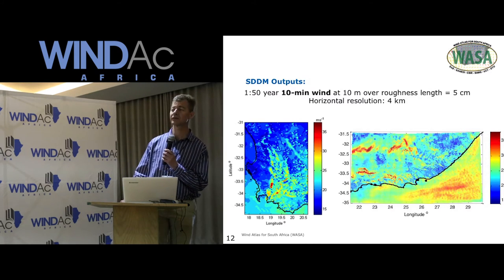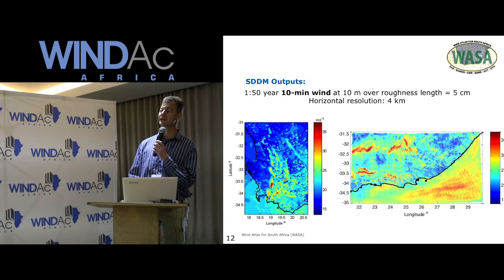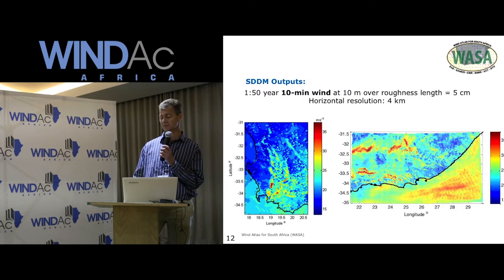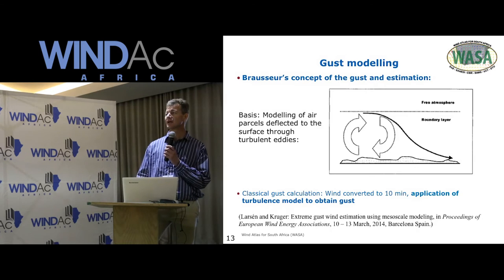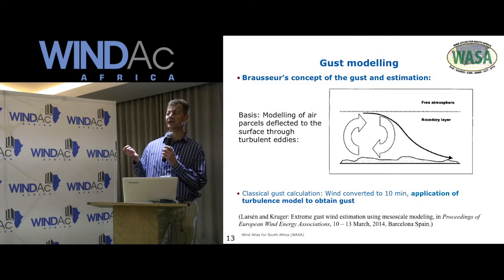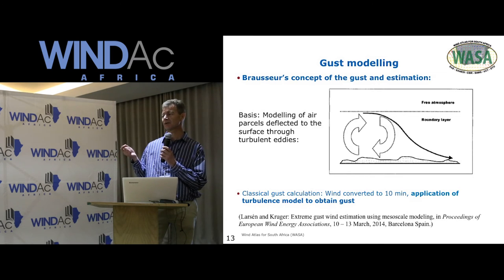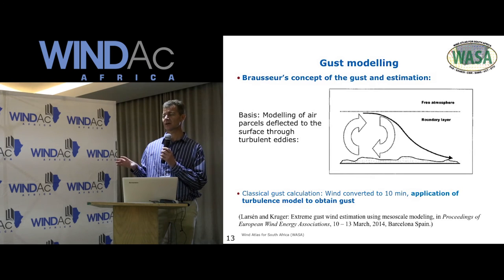This is the output from the selective downscaling method: the 1-in-50-year 10-minute wind at 10 meters height over a roughness length of 5 centimeters, at a horizontal resolution of 4 kilometers. From that you must do your gust modeling — we applied the Sears concept of gust estimation, where the basis is to model air parcels deflected to the surface through turbulent events, with the wind converted to 10 meters through application of a turbulence model. We did a comprehensive paper on that.